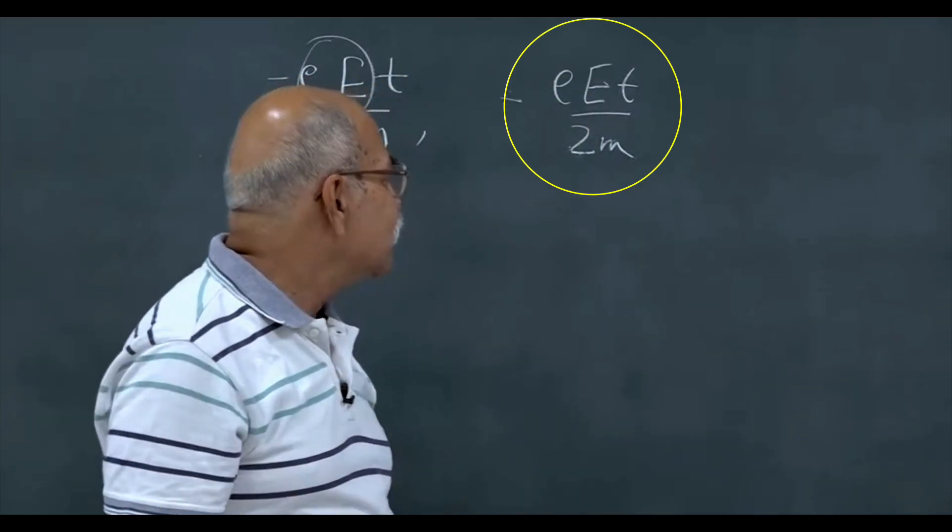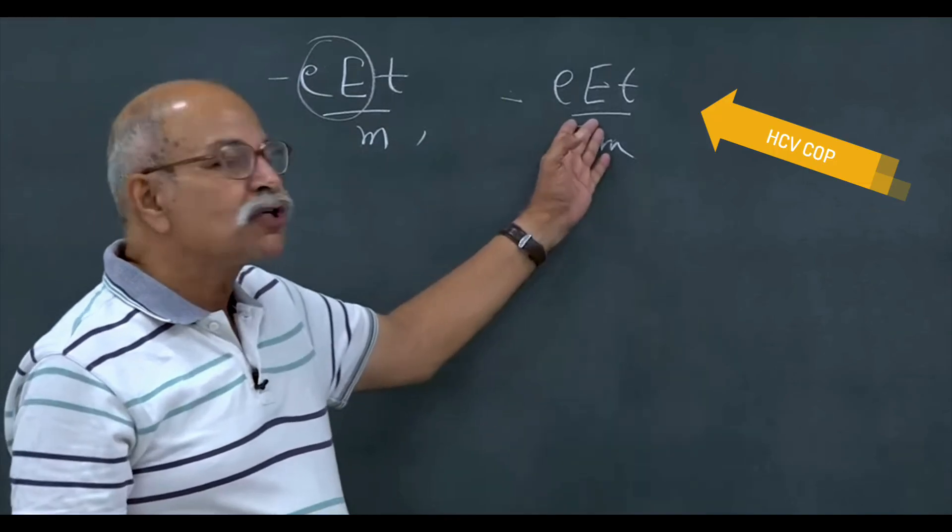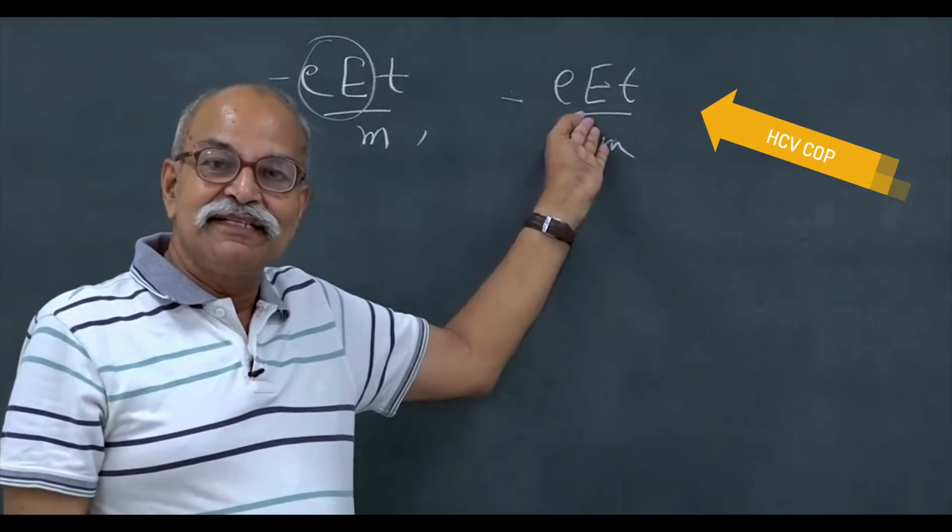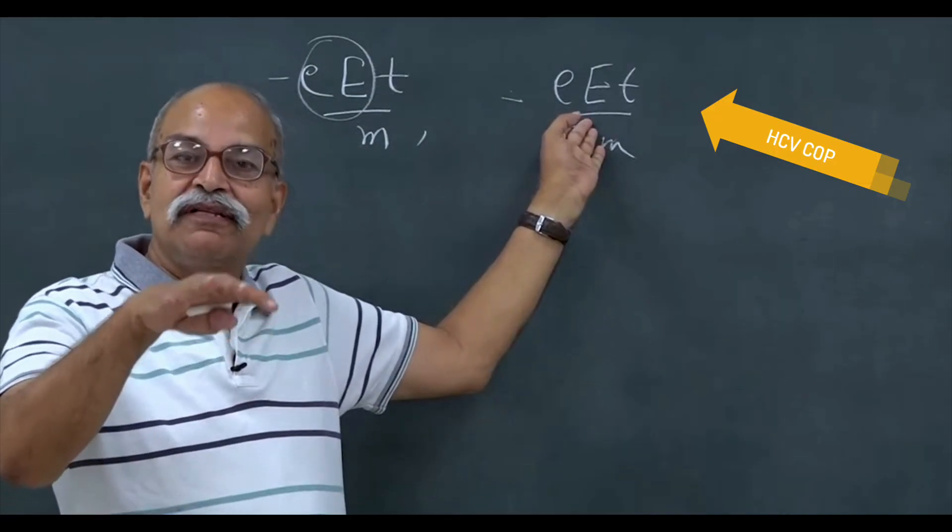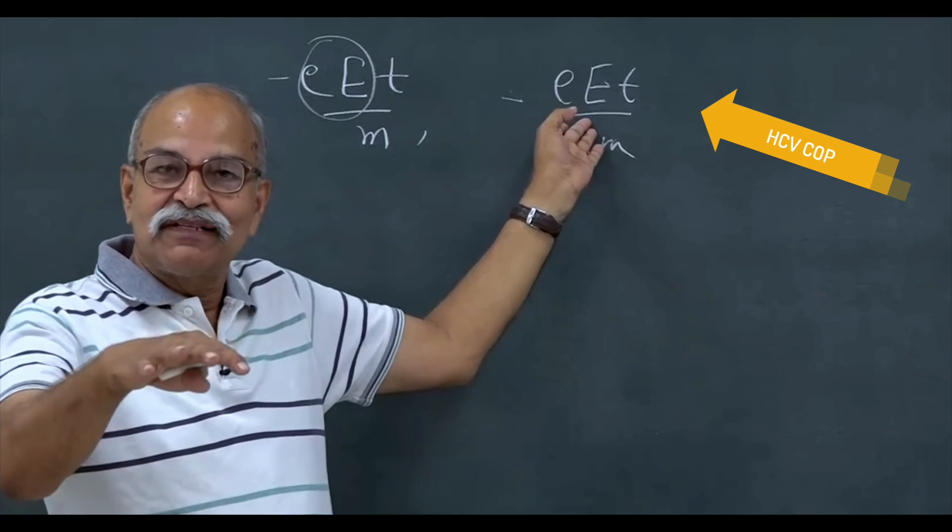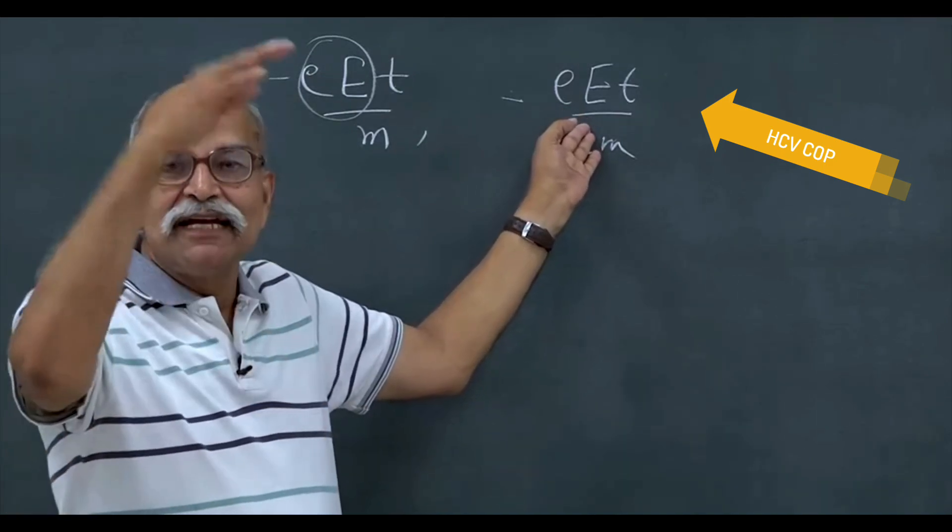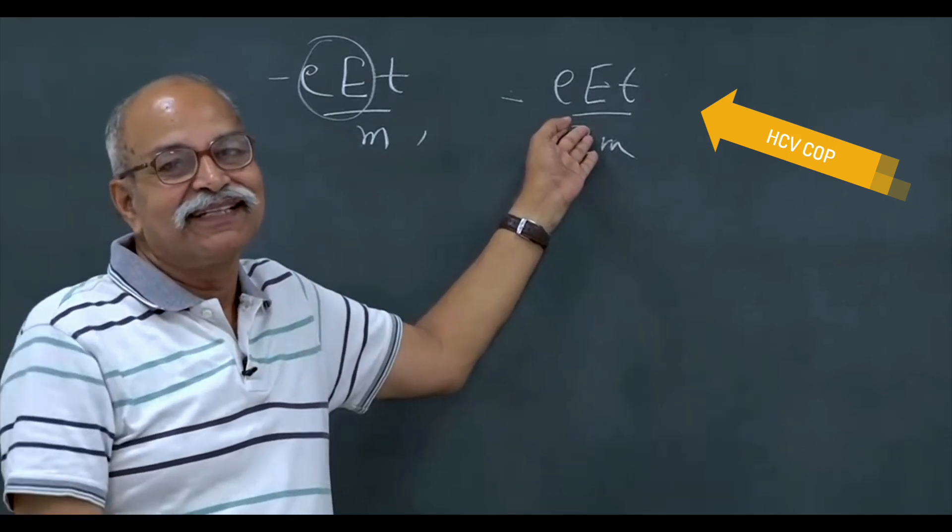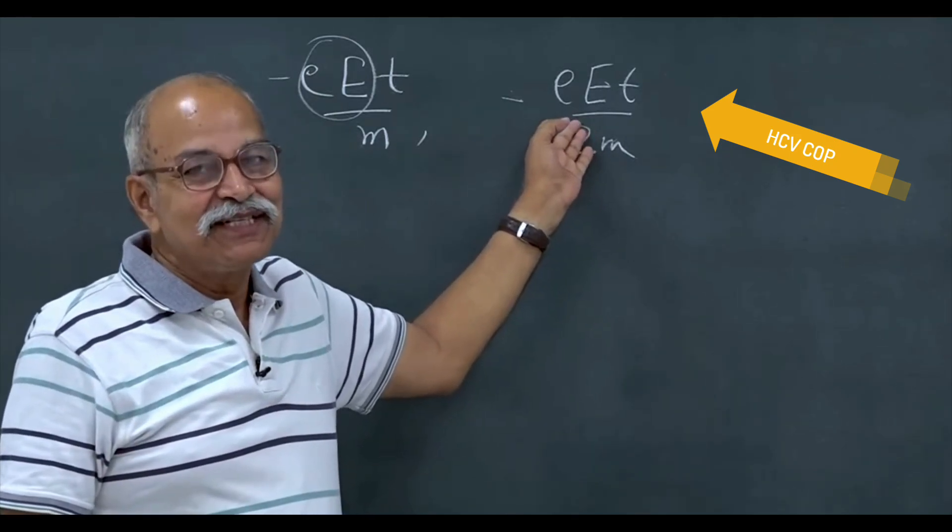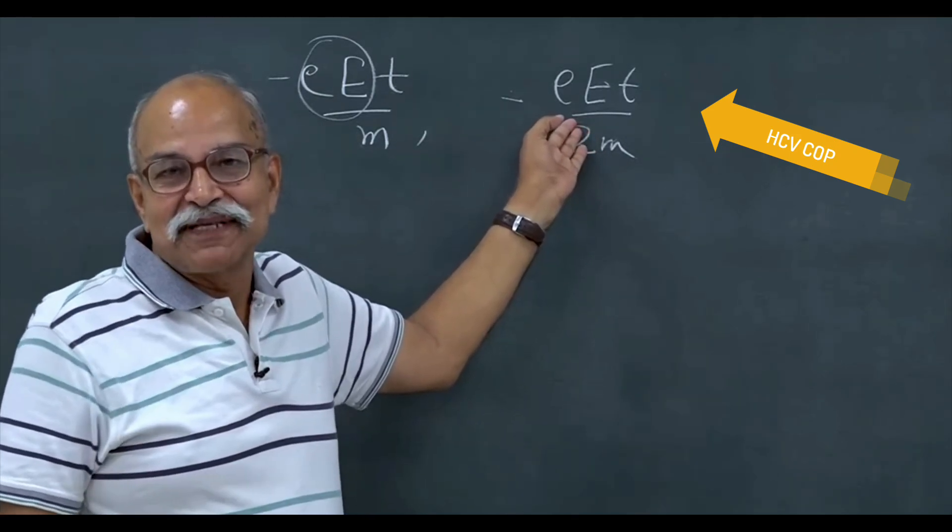Here when I am taking this approach, my approximation is that I assume that all these electrons are moving with the same average velocity or whatever the average velocity, that is the velocity of all the electrons. That assumption I have taken, which is a very simplistic assumption.